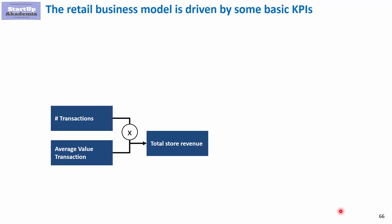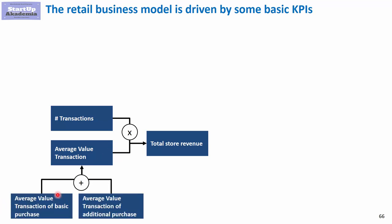Let's have a look at the basic metrics that drive the result in a store. Typical store revenues are generated by the number of transactions and the average transaction value. The average transaction value is actually driven by two things: the basic purchase that the shopper came to do, and the additional purchases that we inspire them to make.